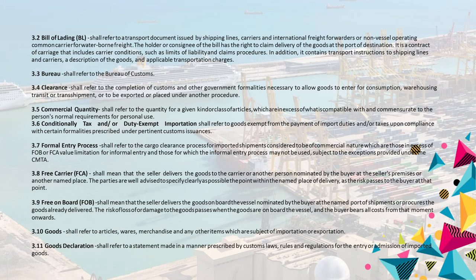3.2 Bill of Lading (BL) shall refer to a transport document issued by shipping lines, carriers, and international freight forwarders or non-vessel operating common carrier for waterborne freight. The holder or consignee of the bill has the right to claim delivery of the goods at the port of destination. It is a contract of carriage that includes carrier conditions such as limits of liability and claims procedures. In addition, it contains transport instructions to shipping lines and carriers, a description of the goods, and applicable transportation charges.